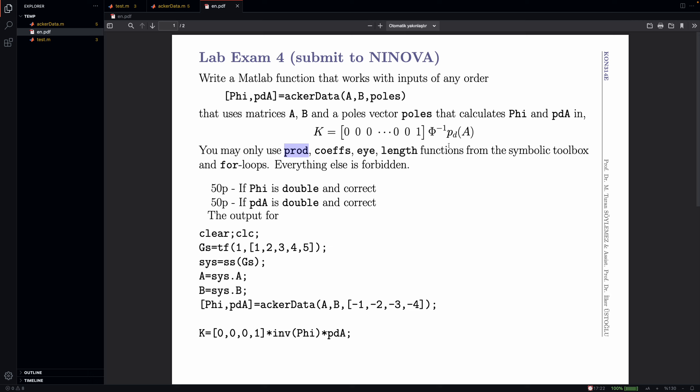We want you to code it from the bare minimum because it's important to remind you of phi and PDA. If phi is correct, 50 points. If PDA is correct, 50 points.